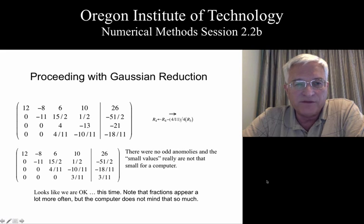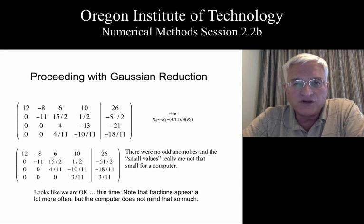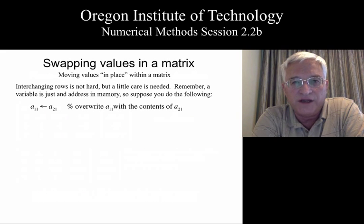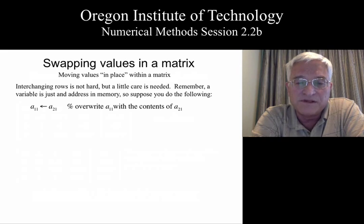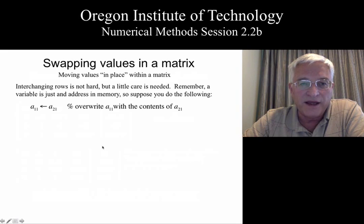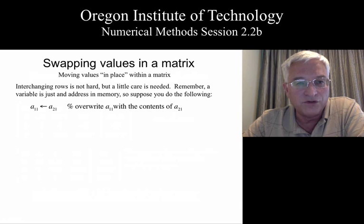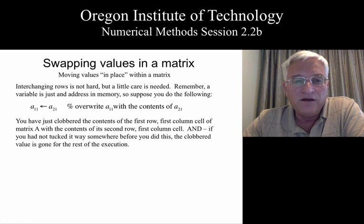Now that we have completed the demonstration of Gaussian reduction with simple partial pivoting on a 4x4 system, we need to turn this into an algorithm applicable to any matrix of any size. The main thing to learn is how to swap one row with another. If we want to swap row 1 and row 2, starting at column 1 we move the element at row 2 column 1 into its position in row 1, then repeat for all other columns. The problem is we've clobbered every value in row 1 and can't recover it, so we can never get row 1 into row 2.